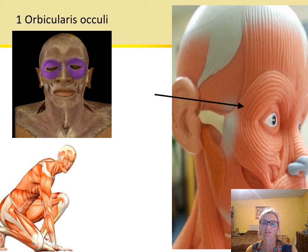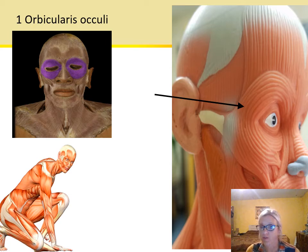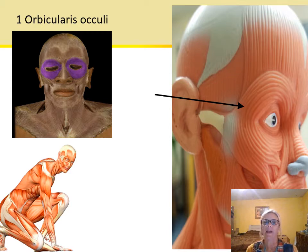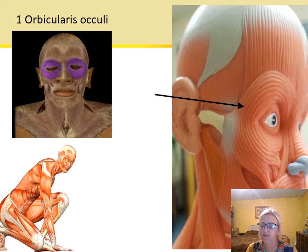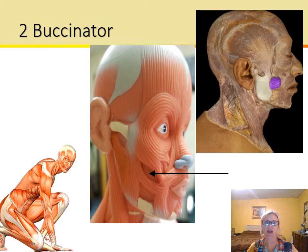Orbicularis oculi — hopefully you watched the intro lesson and understand why it's important to know what these words mean. Ocular obviously refers to the eye, and orbicularis basically means little circle. So this is a little circle around the eye, and it helps to close your eyelids. This picture from APR shows it quite clearly, and they're easy to see on the models too.